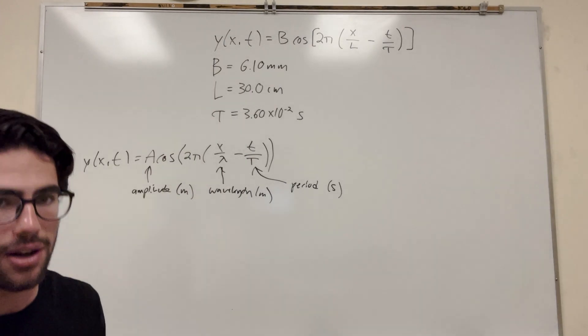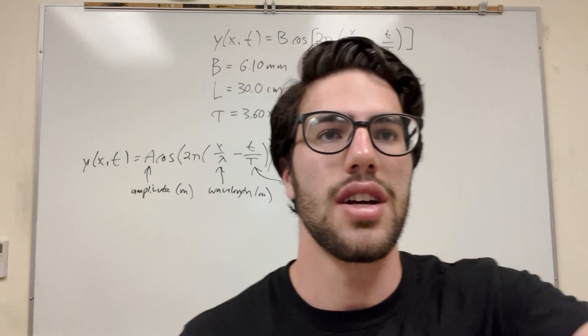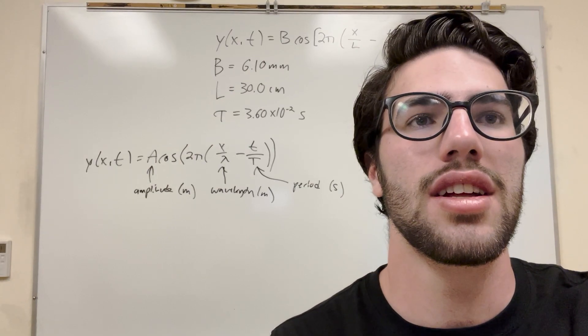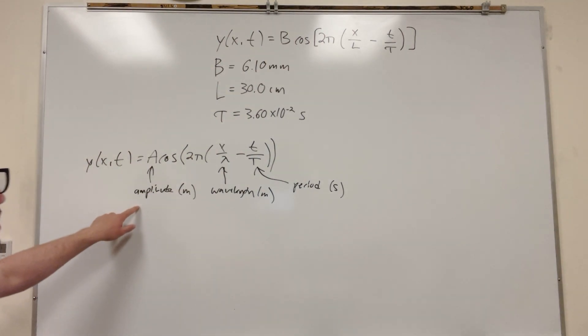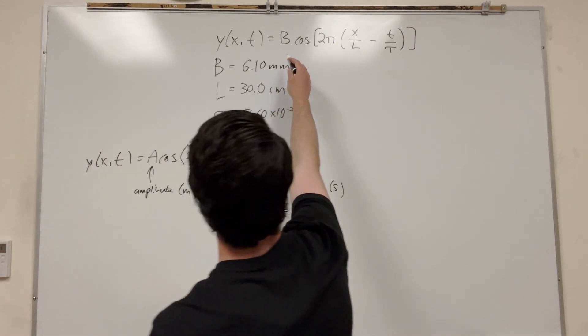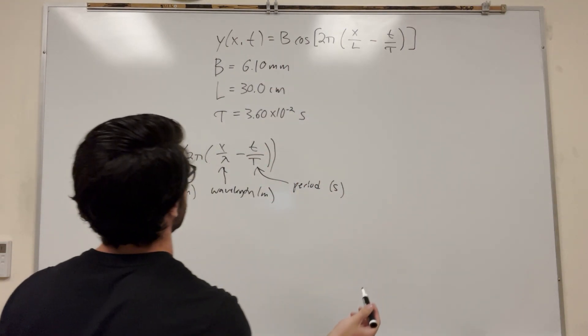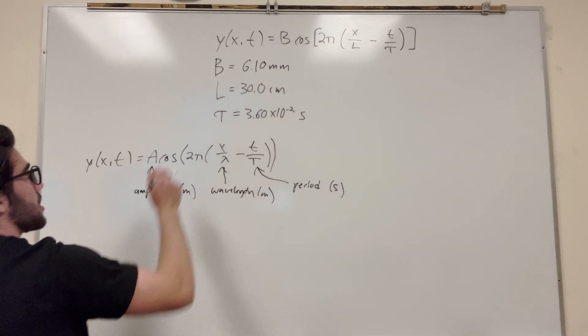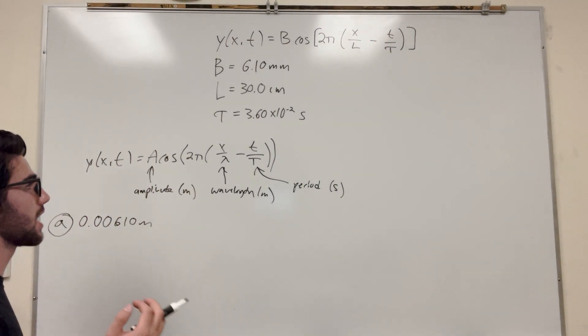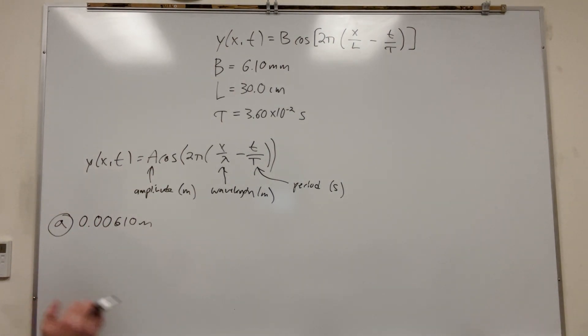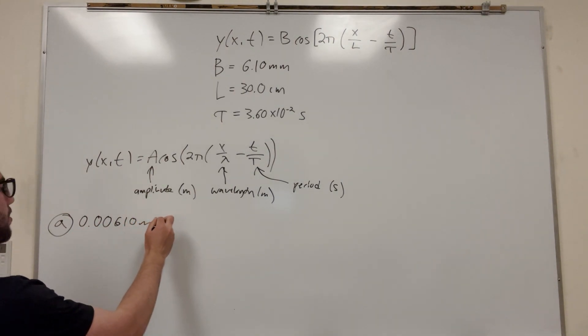So let's see. What is part A asking? Part A is asking what's the amplitude, right? So like we just said here, this A in front of the cosine is its amplitude. So this A directly corresponds to this B value here. So that means that its amplitude is just going to be whatever B is, which is 6.10 millimeters. So the answer wants it in meters. So it's going to be 0.00610 meters. Just divide it by a thousand to get it in meters. That's its amplitude, I'll put that equal to A.